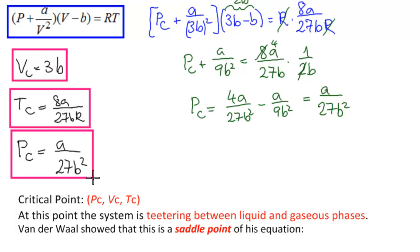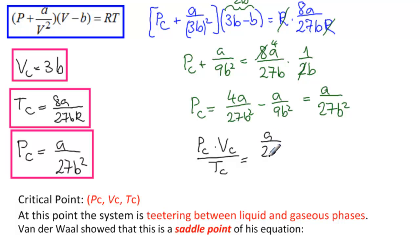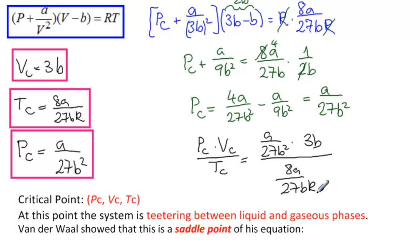So there's our critical point. A final result: PCVC over TC equals (A over 27B²) times 3B, divided by (8A over 27BR). All the A's and B's cancel, and we get 3R over 8.